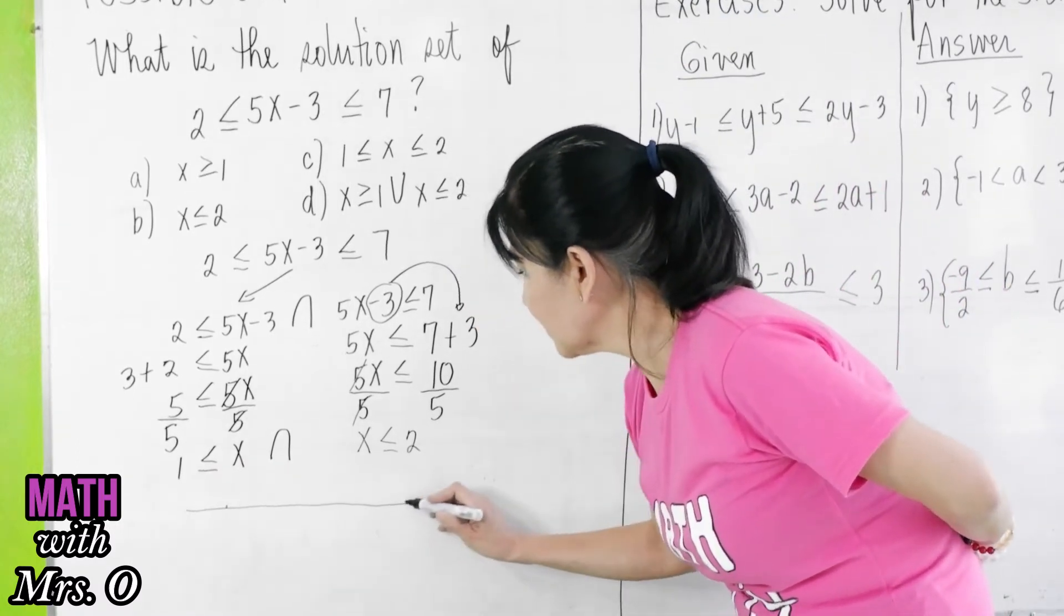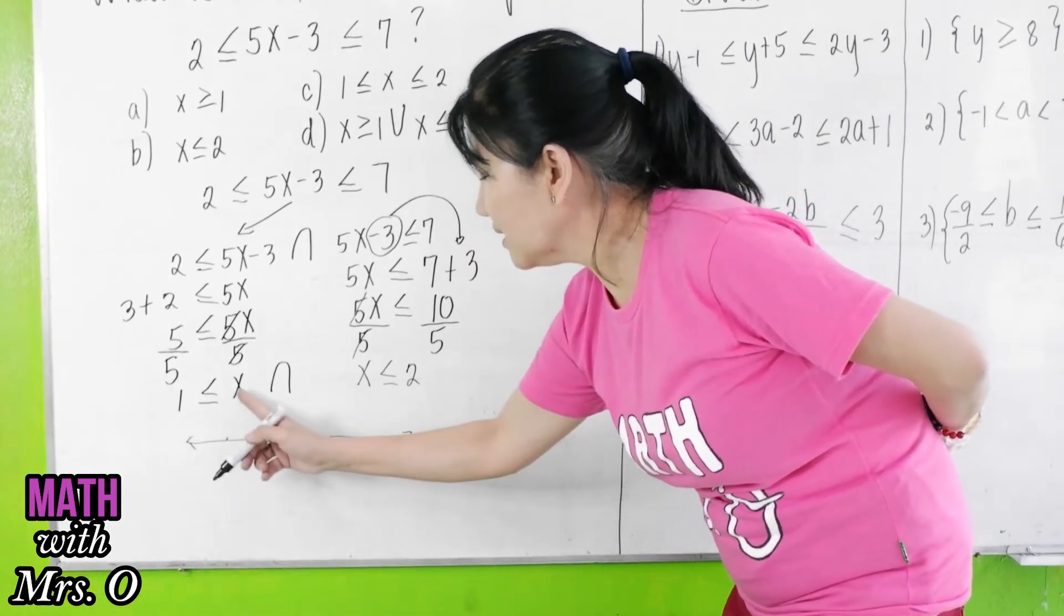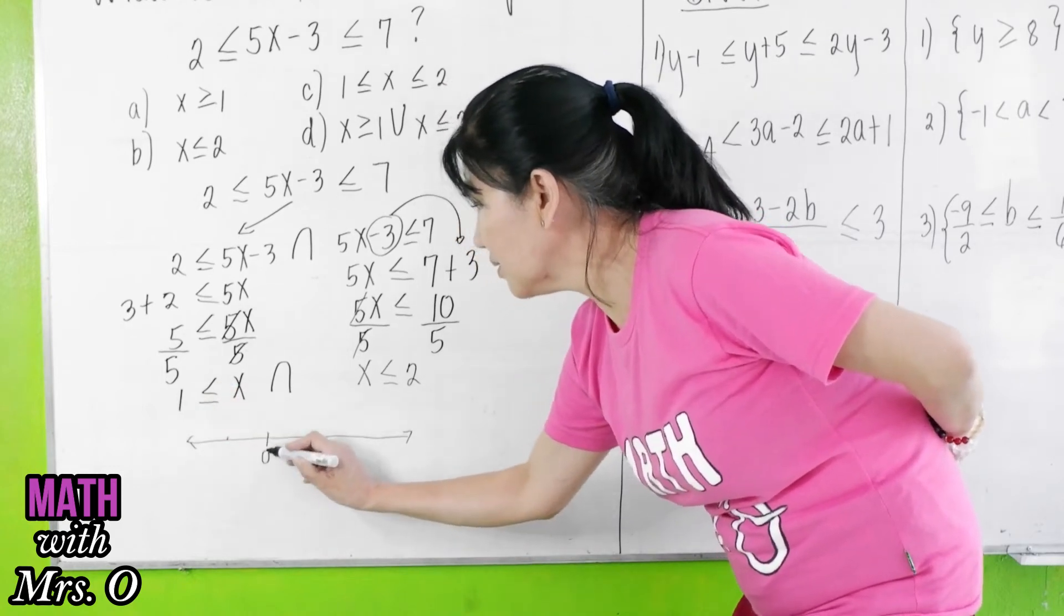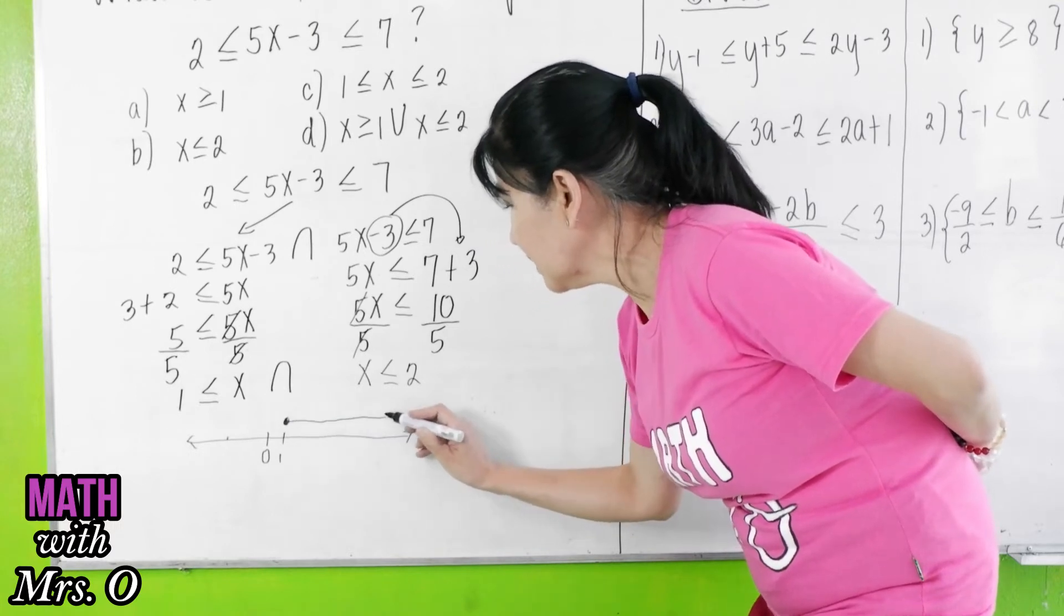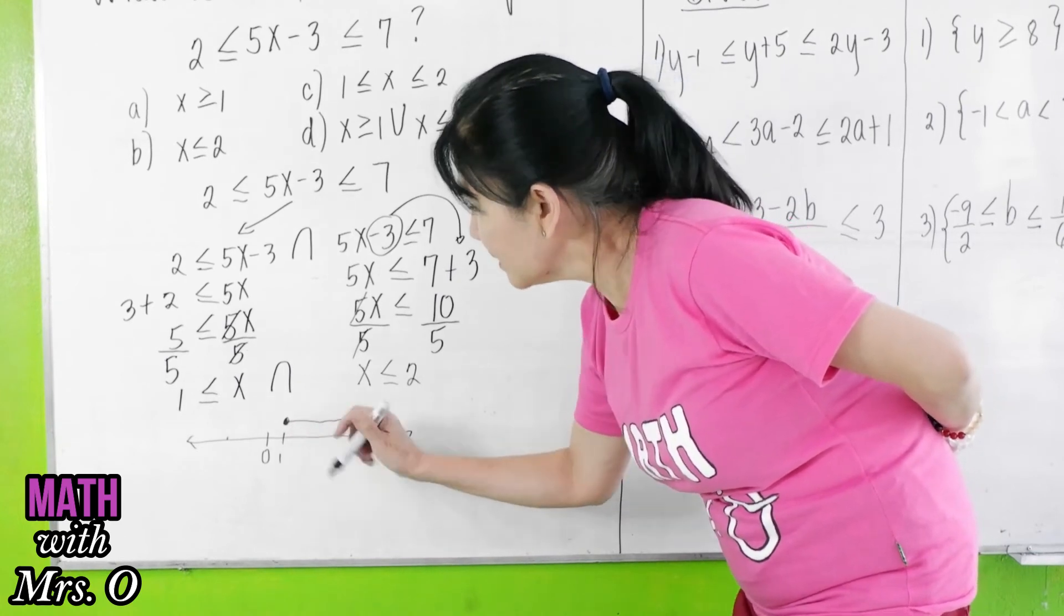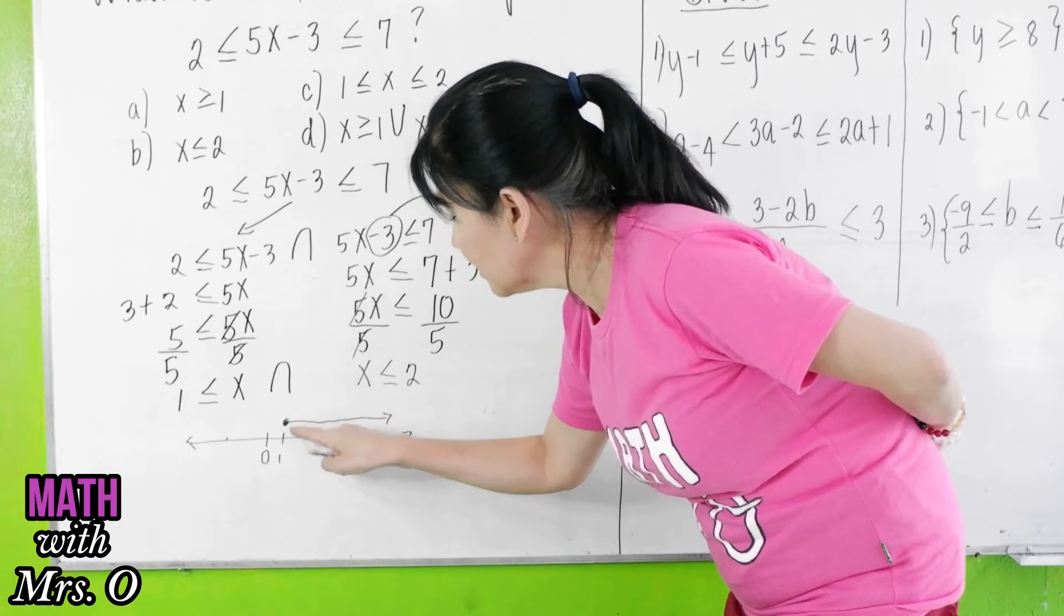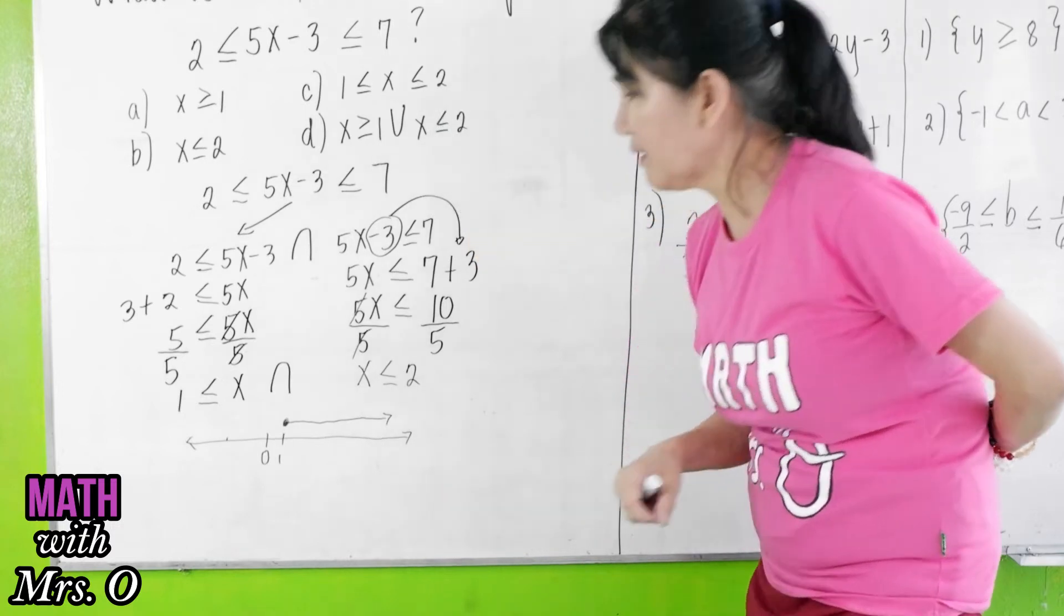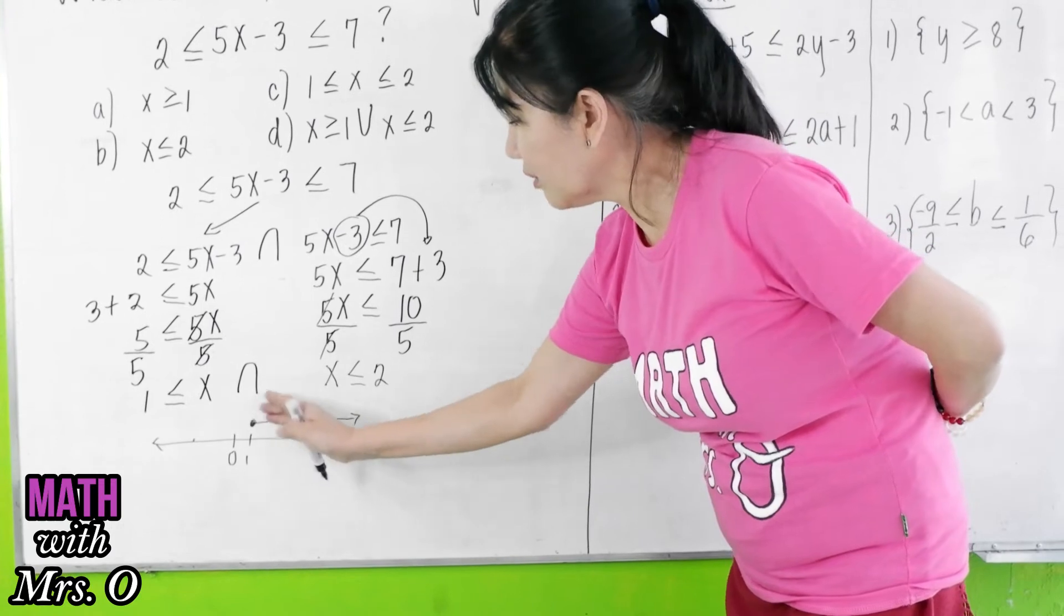you can graph each inequality. Graph x is greater than or equal to 1. So, if this is 0 and this is 1, x is greater than or equal to 1. You put a shaded circle here and make a ray pointing to the right side, because the numbers which are greater than or equal to 1 are on the right side.